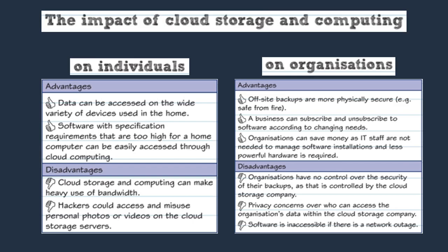The downside of using online systems for organisations is the fact that they have less control over security, as any backups are stored online. There are always issues surrounding privacy because data backed up online is more likely to be accessed by hackers. Another issue is that if there is no Wi-Fi or internet connection, these companies can't access their data because it's all stored online.